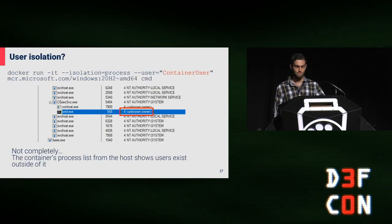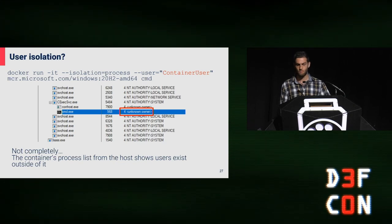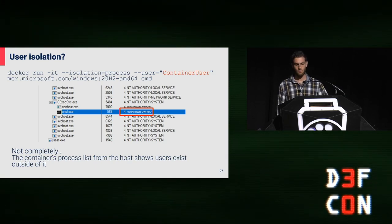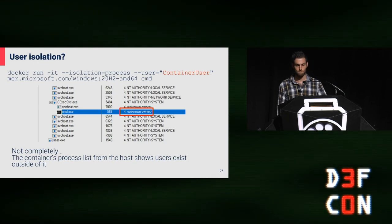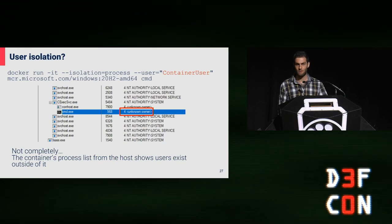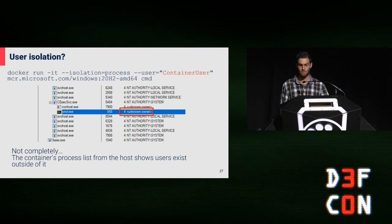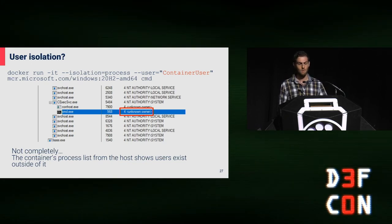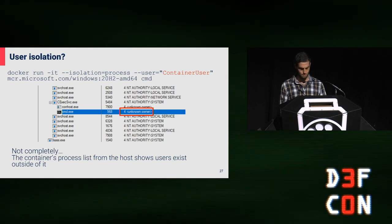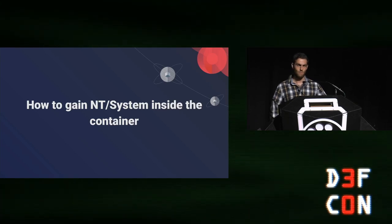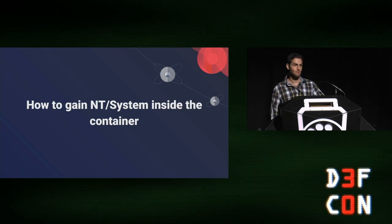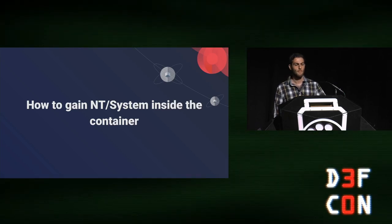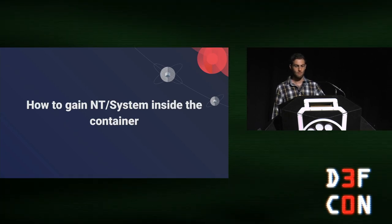When running a container as container user, I noticed that Process Explorer running outside of the container doesn't detect the container user, but it did detect all the other system processes running inside the container. This raises the question: why do we have system processes inside of the container, and do they have the same permissions as system processes outside? System processes inside the container have almost the same permissions, but if there are isolation checks, we can't do that — so we need to find a way to bypass that.